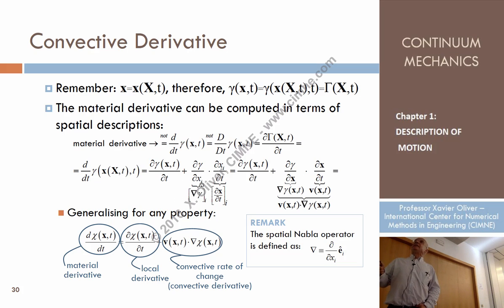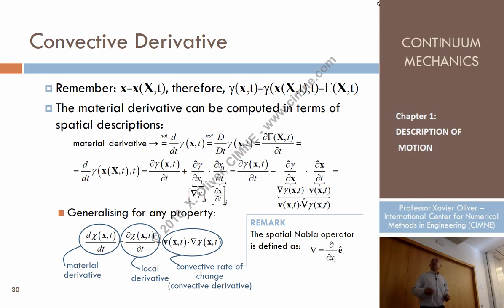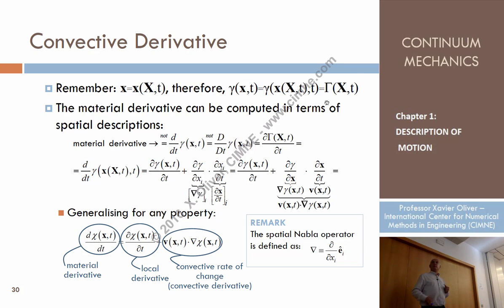Look, here we have a repeated index in i — that means summation. So the result is: derivative of gamma with respect to x1 times derivative of x1 with respect to t, plus derivative of gamma with respect to x2 times derivative of x2 with respect to t, plus derivative of gamma with respect to x3 times derivative of x3 with respect to t. We now have a different derivative: the local derivative of the spatial description, plus the derivative of the spatial description with respect to space times something.